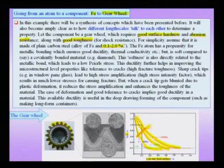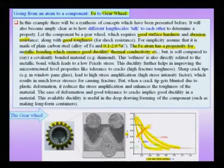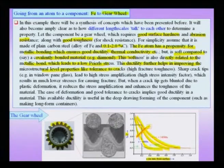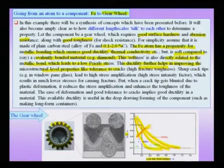If you want to start from the bonding level of iron, we know that iron has a propensity for metallic bonding which ensures good ductility and good thermal conductivity. It does not overheat and heat tends to get dissipated away. But it is soft compared to a covalently bonded material like diamond. This softness is directly related to the metallic bond which leads to low Peierls stress — the Peierls stress being the inherent lattice friction for the motion of a dislocation. This ductility further helps in improving microstructure-level properties like tolerance to cracks, which leads to high fracture toughness. Sharp cracks lead to high stress amplification and should be avoided in a real component.